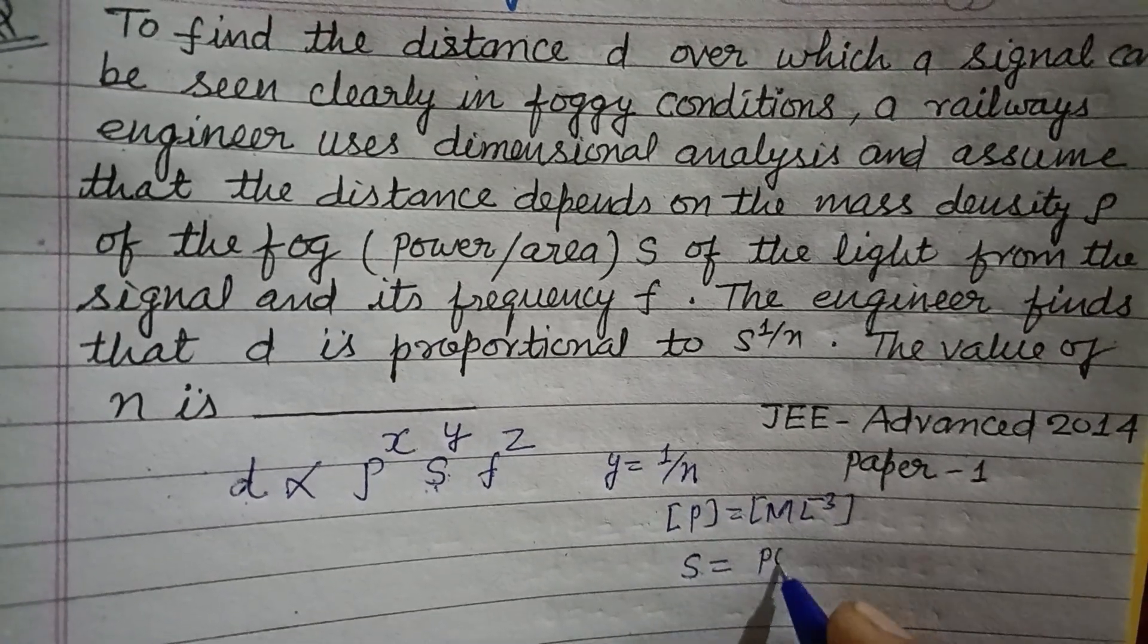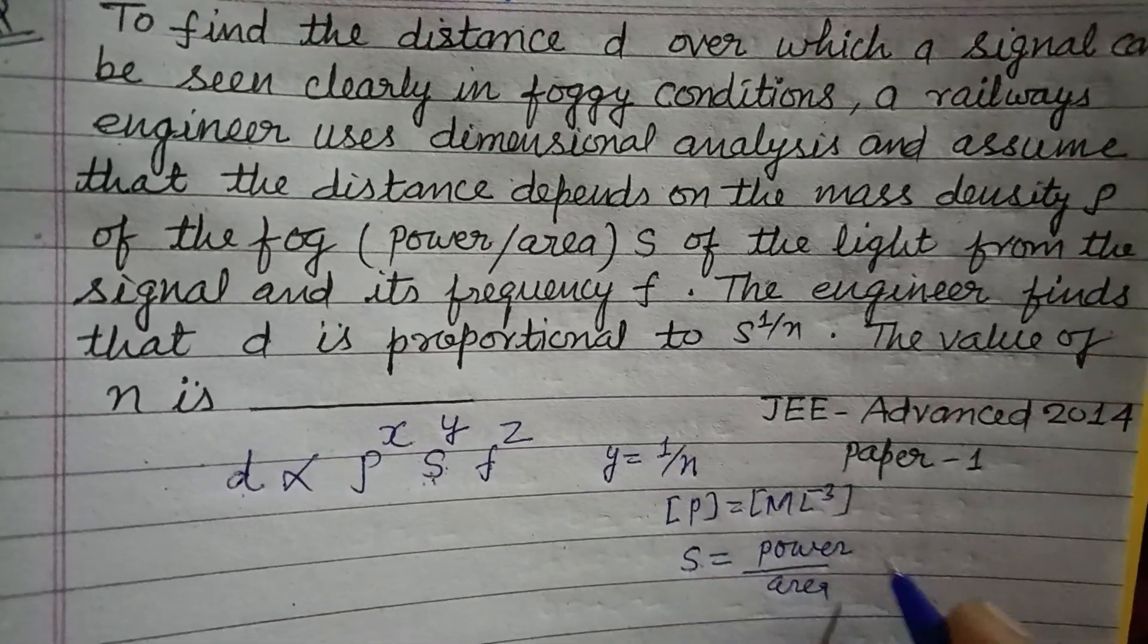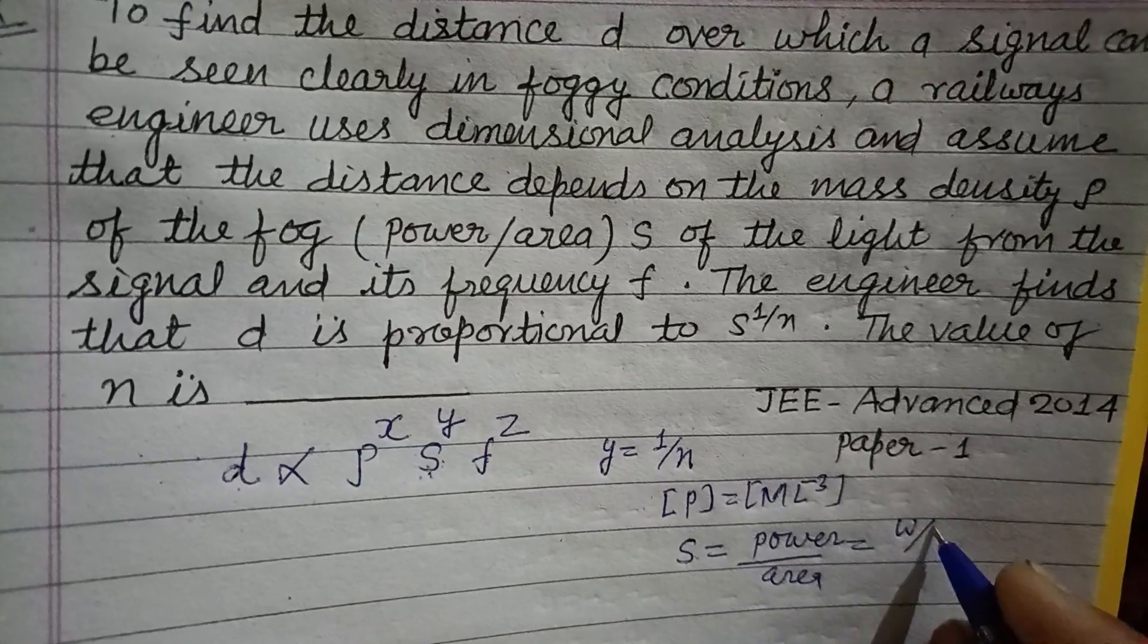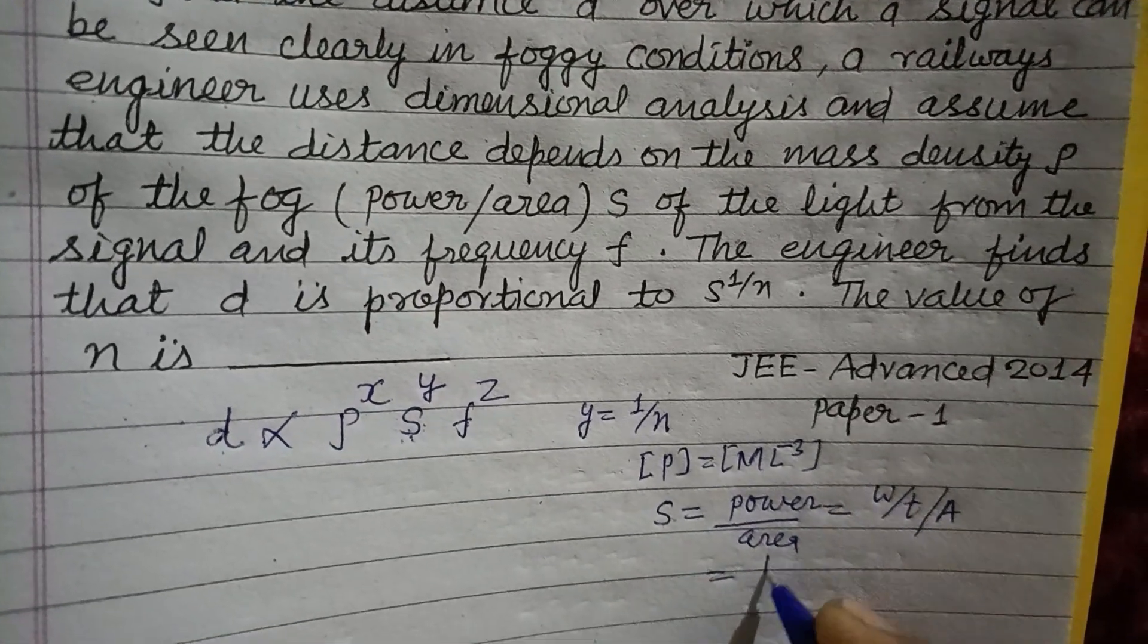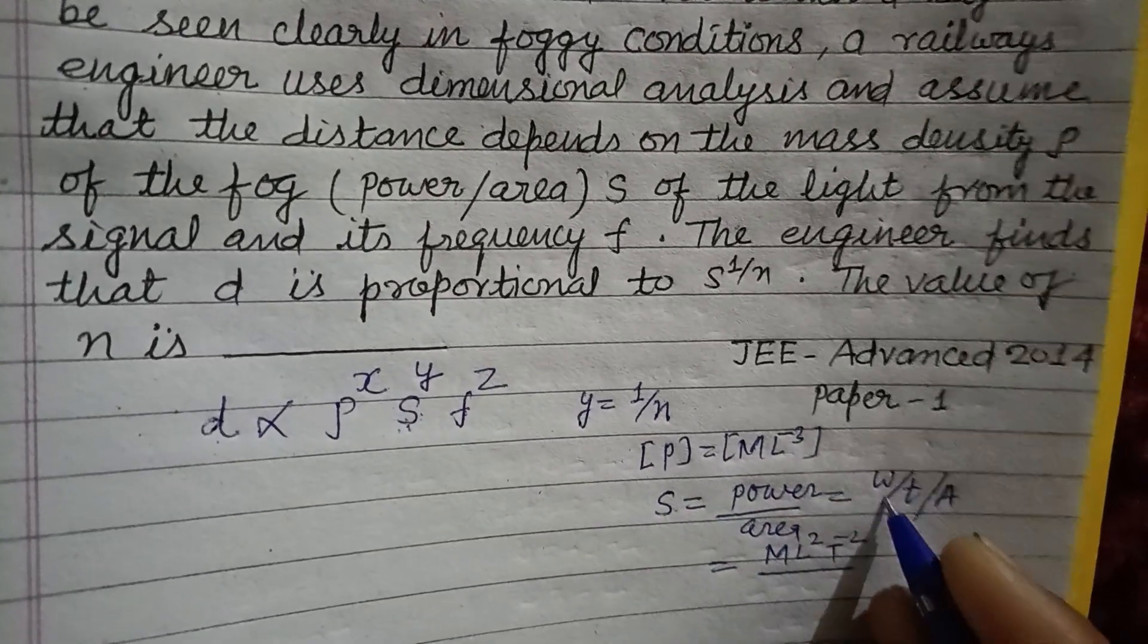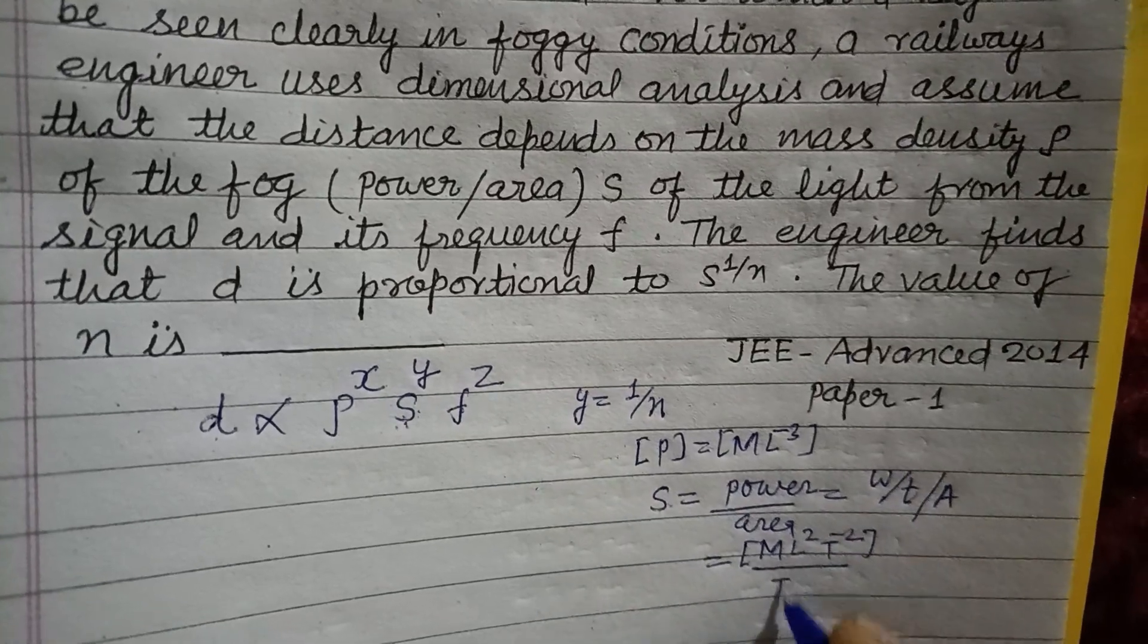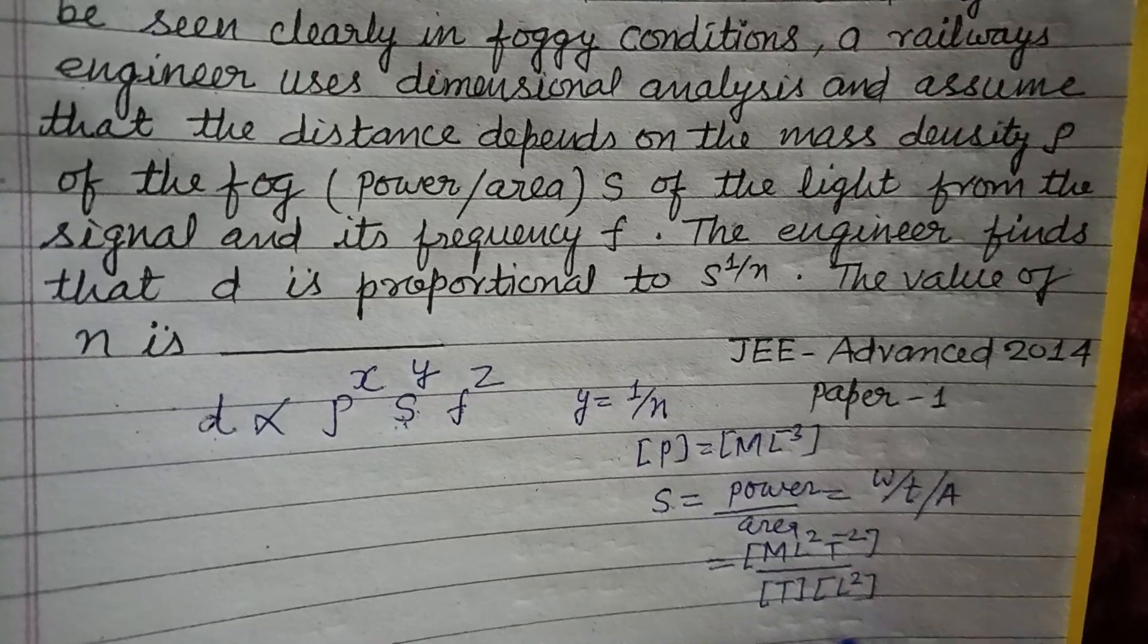So W is work, ML^2T^-2 is the dimension of work over t time dimension, and this is dimension of area which is L^2. So here L^2, as you cancel, we got dimension of s which is MT^-3, and dimension of area which is L square.